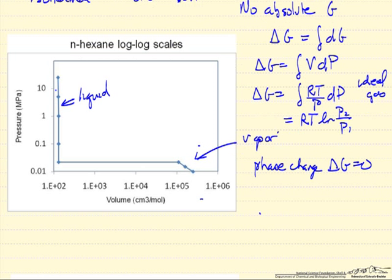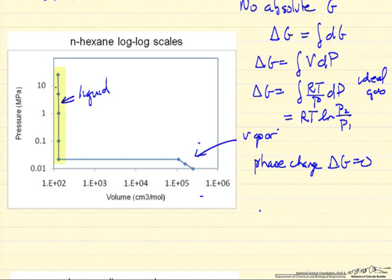And then for the liquid, the volume is essentially constant over a relatively large pressure change, so the delta G change now for the liquid, we can assume the volume of the liquid is essentially constant, and multiply whatever pressure change. So this is for the liquid.